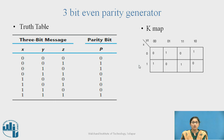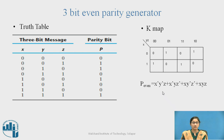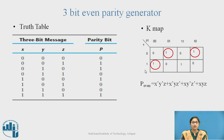This is the K-map for the 3-bit Even Parity Generator. The 0s and 1s from the truth table for P are entered in the K-map. From that, P_even is equal to the following expression. Grouping the 1s: X̄·Ȳ·Z, X̄·Y·Z̄, X·Ȳ·Z̄, and X·Y·Z are the four min-terms written from this K-map.